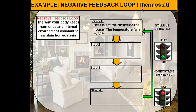In our example here, we're going to set the heat for 70 degrees inside the house. That's our homeostatic level — that's where we want the temperature to be. But as we know, eventually rooms are going to cool down, so this room is going to fall to 69 degrees. As your thermostat is monitoring the temperature in the room, it's going to read this fall to 69 degrees and say, that's not 70 degrees, so we've got to do something about this.